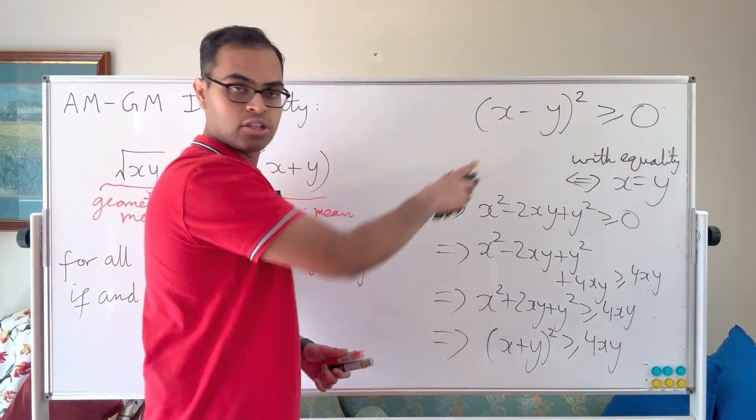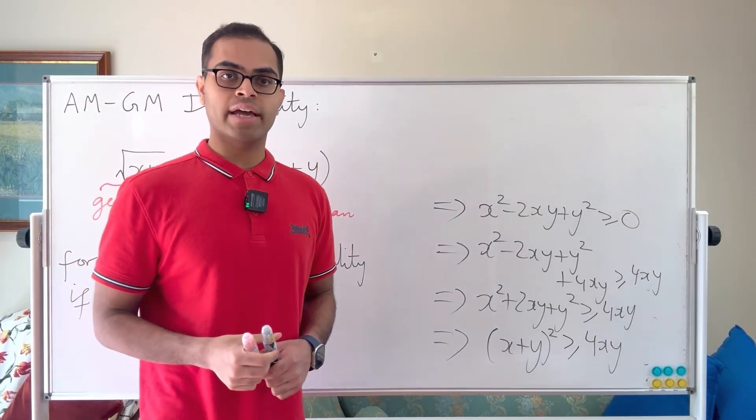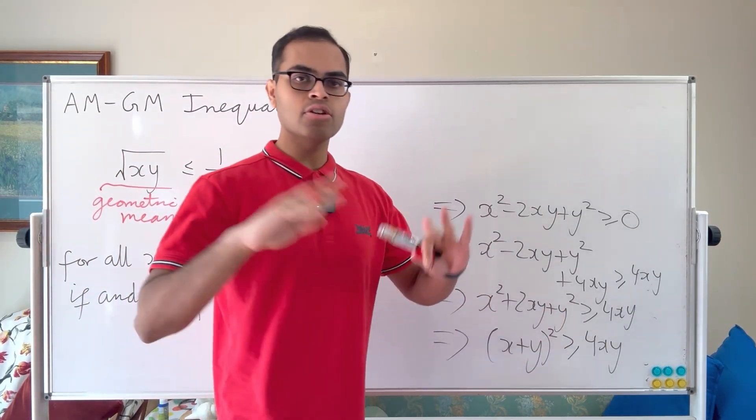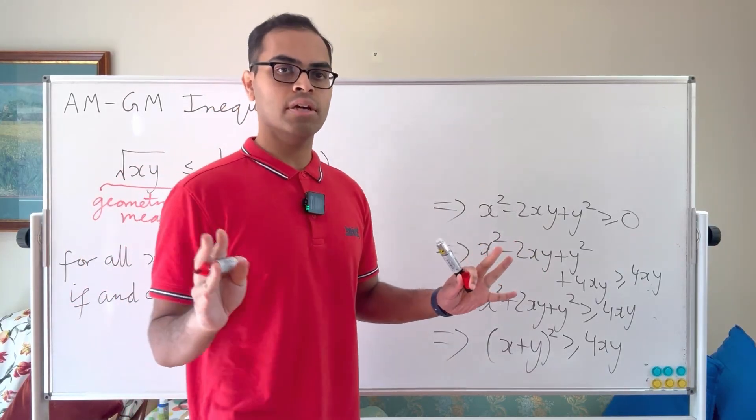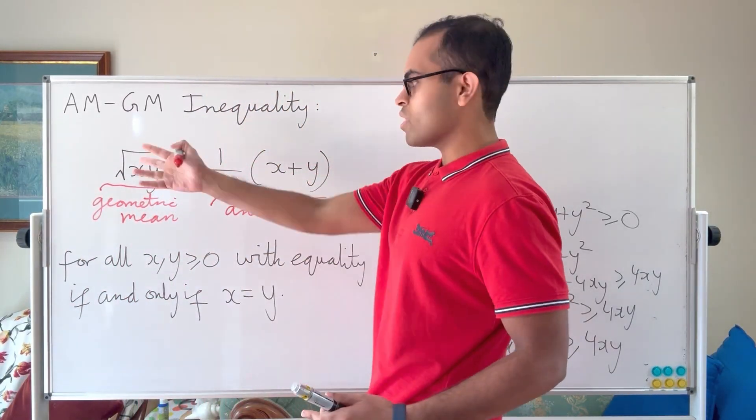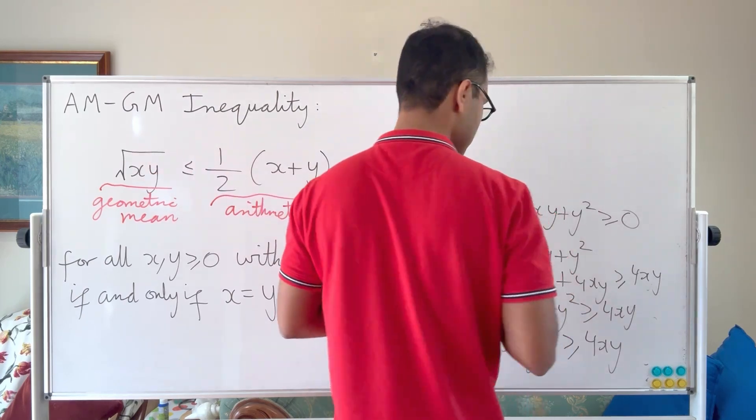We're now going to take square roots on both sides. We know that x and y are non-negative. That's important, otherwise it doesn't even make sense to take the square root of x, as it could be the square root of a negative number.